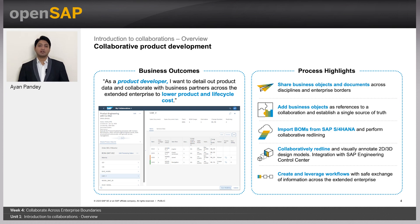Let us deep dive into each of these processes. First, collaborative product development, whose business outcome states: as a product developer, I want to detail out the product data and collaborate with business partners across the extended enterprise to lower the product and lifecycle cost. The process highlights are sharing business objects and documents across disciplines and enterprise borders, adding business objects as reference to a collaboration and establishing a single source of truth, importing bill of materials from SAP S/4HANA and performing collaborative redlining, collaborative redline and visual annotations on 2D and 3D design models, integration with SAP Engineering Control Center, and creating and leveraging workflows with safe exchange of information across your extended enterprise.